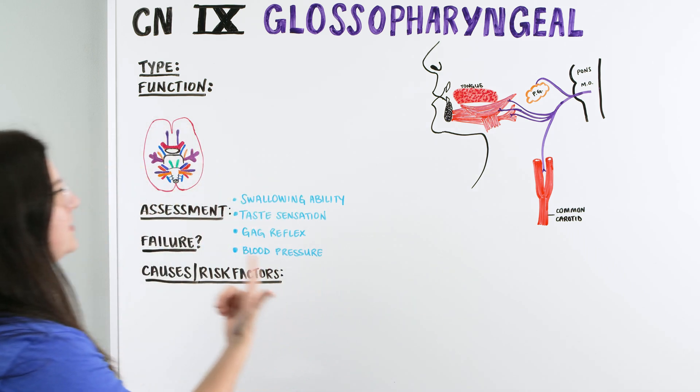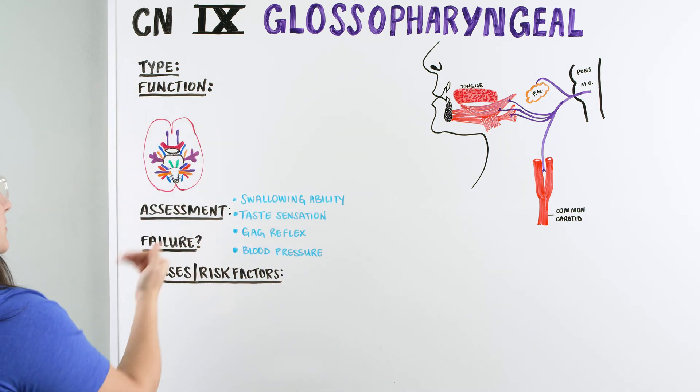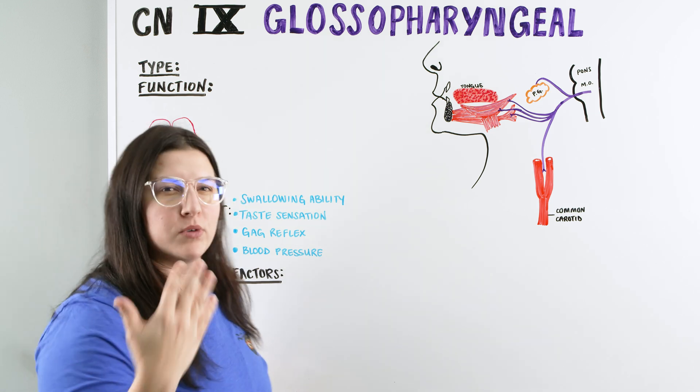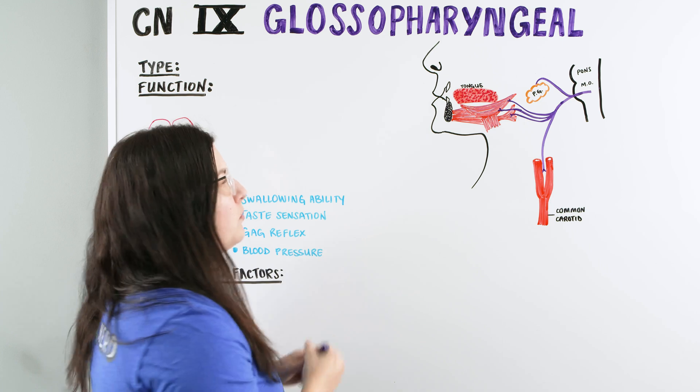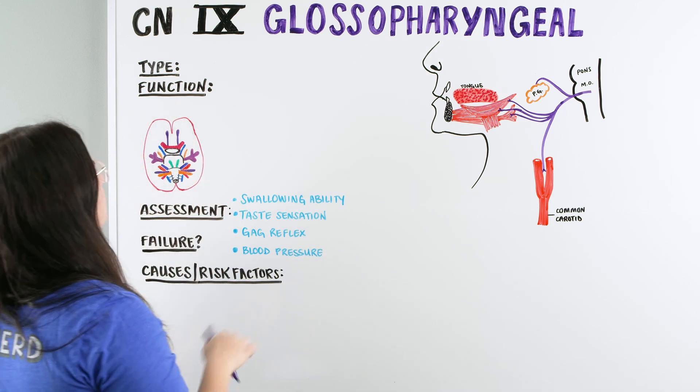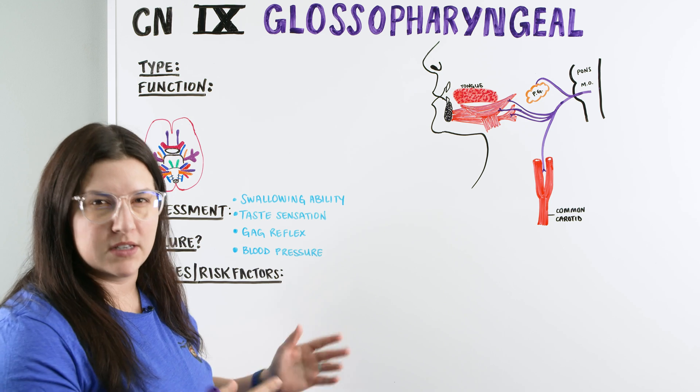As we've been going through these lectures, we're looking at the type, the function, assessment, if that assessment has failed, and then what is the cause or possible risk factors that would make the nerve not work properly. So with the glossopharyngeal, the type is both. We have some motor and some sensory.